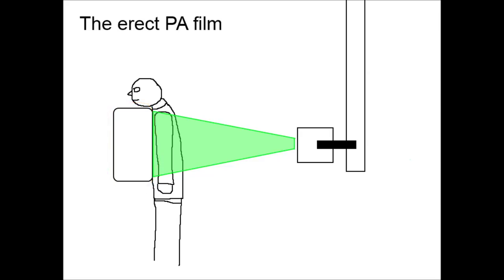The most important property of the beam of radiation passing through the patient is that it passes more easily through light things with a low density, like air, and passes less easily through dense heavy things like bone and fluid. Because the image is negative, the bits of the film with less x-ray exposure show up lighter — this is why bone appears white.